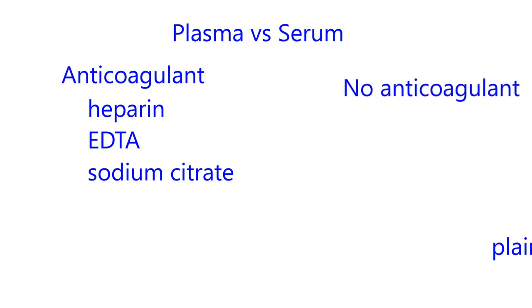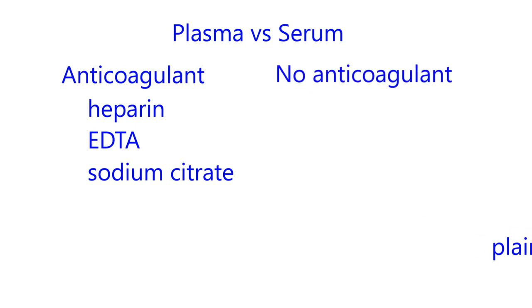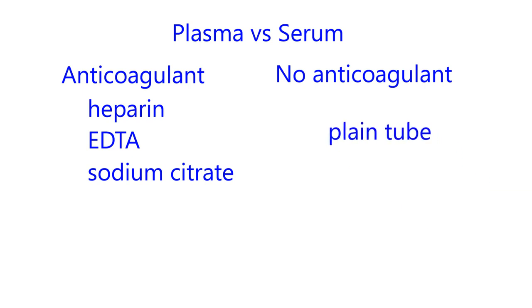If you have no anticoagulant in the tube, you spin the blood just like you do in the case of plasma. But if you have no anticoagulant, then the top fluid portion is called serum, because serum is what's left over after a clot is formed. To collect serum, you would have what's called a plain tube — a tube with no anticoagulant.